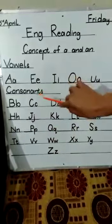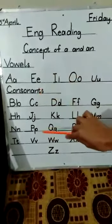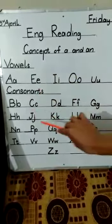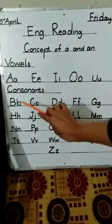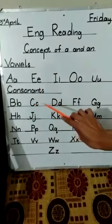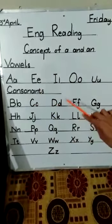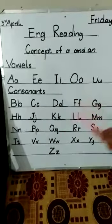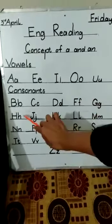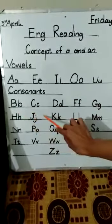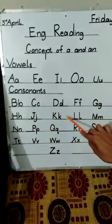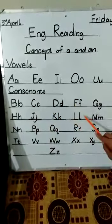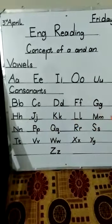These are consonants. Student, learn with me: B, C, D, F, G, H, J, K, L, M.